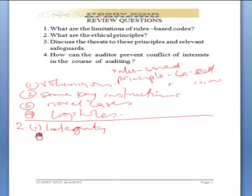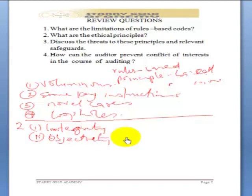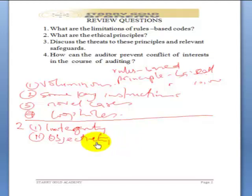Number two, the auditor is expected to be objective — objectivity — and that is, of course, related to independence of the auditor. The auditor is supposed to be without bias at all times, look at things objectively, such that if another person comes and reviews the same thing, they will come to the same conclusion.